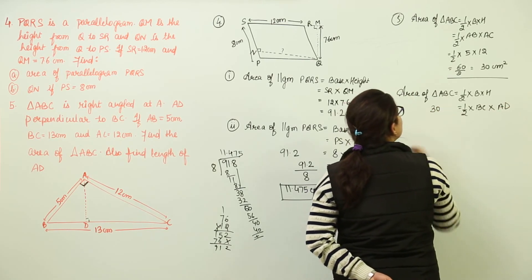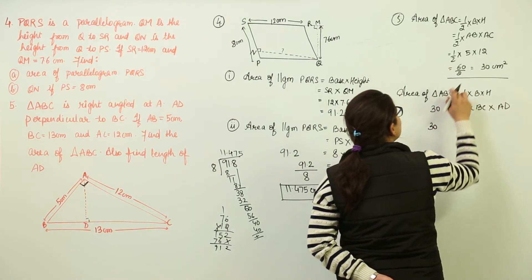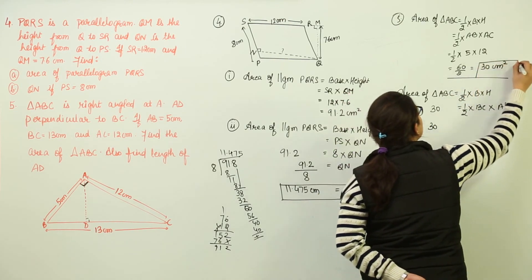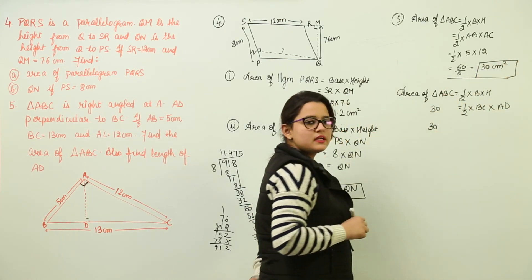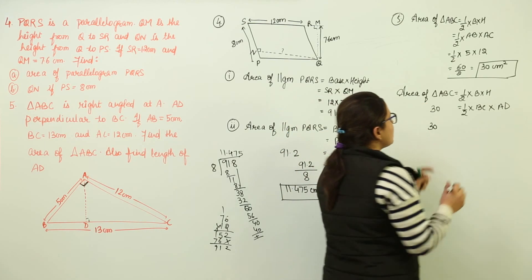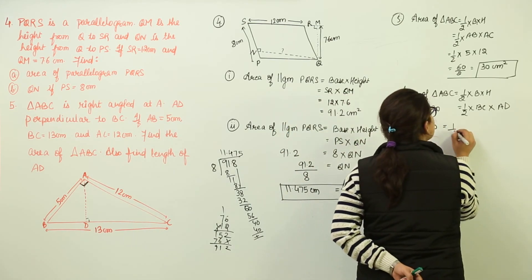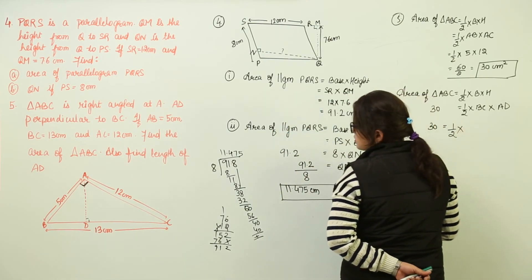Because already we have found out that area of triangle ABC is 30 centimeters square. So we place that value over the area and we get 1 by 2 into BC is also given to us as 13 and we will find out the AD.